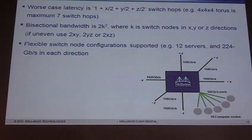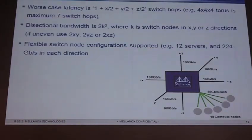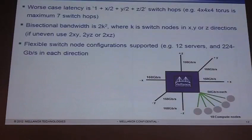Bisectional bandwidth is 2K squared, where K is the switch nodes in any of the X, Y, or Z directions. If this is uneven, you take the worst case of two times X times Y nodes, two times Y times Z, or two times X times Z. We also have very flexible switch node configurations. The example I showed was using 18 links to the servers and three links in all six directions, but you could do 12 servers with four links in every direction as well. It's however you want to mix and match the servers you're supporting with the bandwidth on your links — the constraint is the 36-port building block.